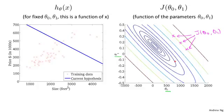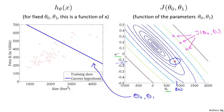Let's look at some examples. Here I have a particular point with theta zero equals about 800 and theta one equals about minus 0.15. This point in red corresponds to a particular pair of values of theta zero and theta one, and corresponds to a hypothesis where theta zero is about 800 — intersecting the vertical axis around 800 — with a slope of about minus 0.15. This line is really not a good fit to the data, so its cost is a value pretty far from the minimum — a pretty high cost.